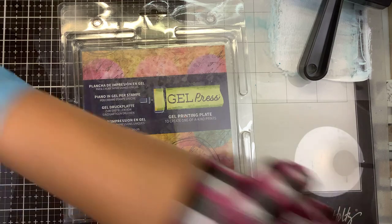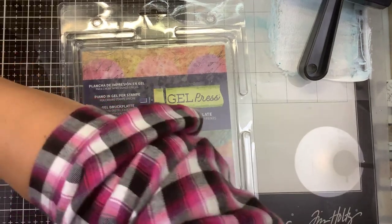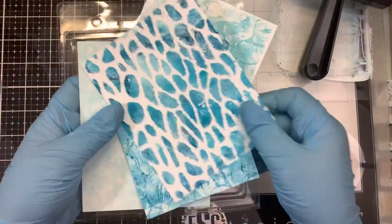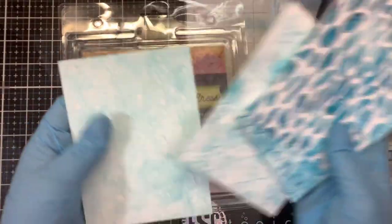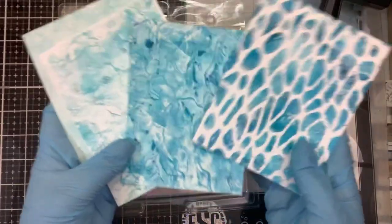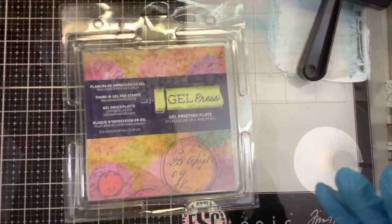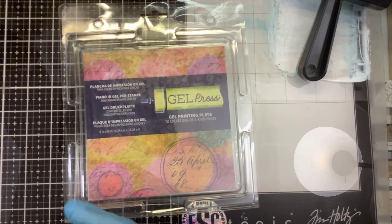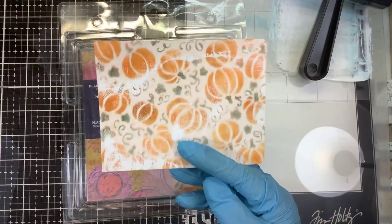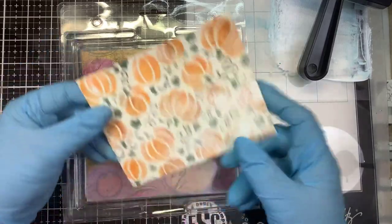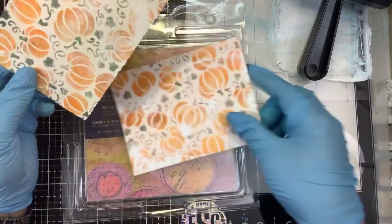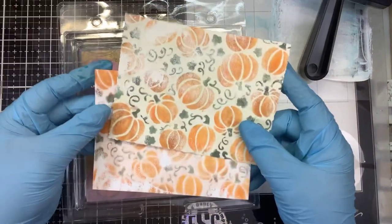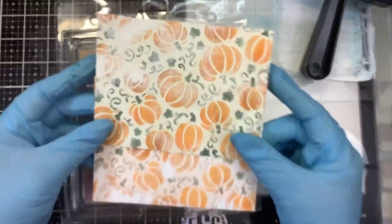I've already done a video making backgrounds using stamps, stencils, and alcohol inks with the Gel Press, and these are the backgrounds I came up with. I'll post that video for you to check out. But I promised a video using Pan Pastels, and here is the look I got. It's a little more vintage look to me, like vintage wallpaper using the Newton's Nook Pumpkin Stencil.